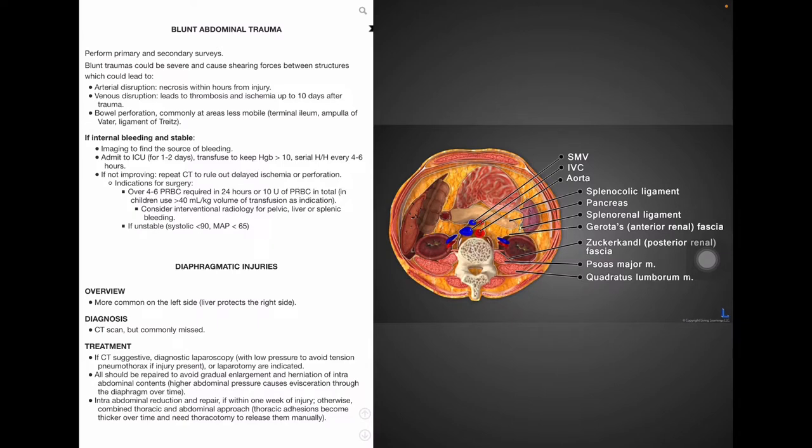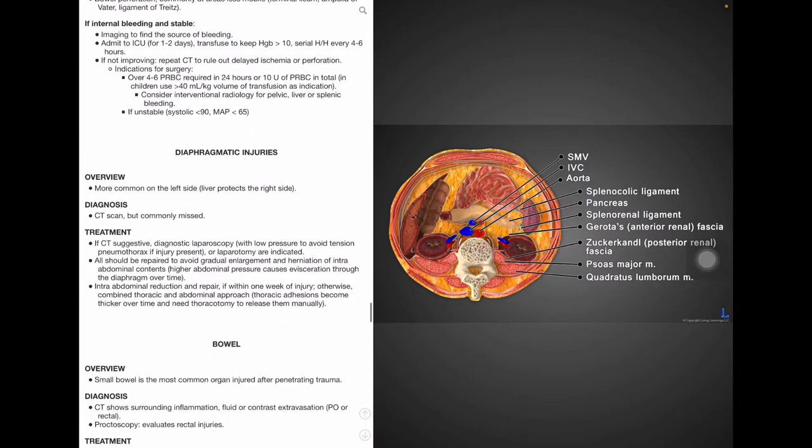Next, we have diaphragmatic injuries, and these injuries are more common on the left side because on the right side, there's the liver to protect the diaphragm. To diagnose a diaphragmatic injury, a CT scan is utilized but is usually missed. If a CT is suggestive, however, a diagnostic laparoscopy or laparotomy are indicated. Surgery repairs should repair all organs to avoid gradual enlargement or herniation of intra-abdominal contents. And higher abdominal pressure causes evisceration through the diaphragm over time. If it is within one week of the injury, intra-abdominal reduction and repair should be performed. Otherwise, a combined thoracic and abdominal approach should be taken. Thoracic adhesions thicken over time and require thoracotomy.